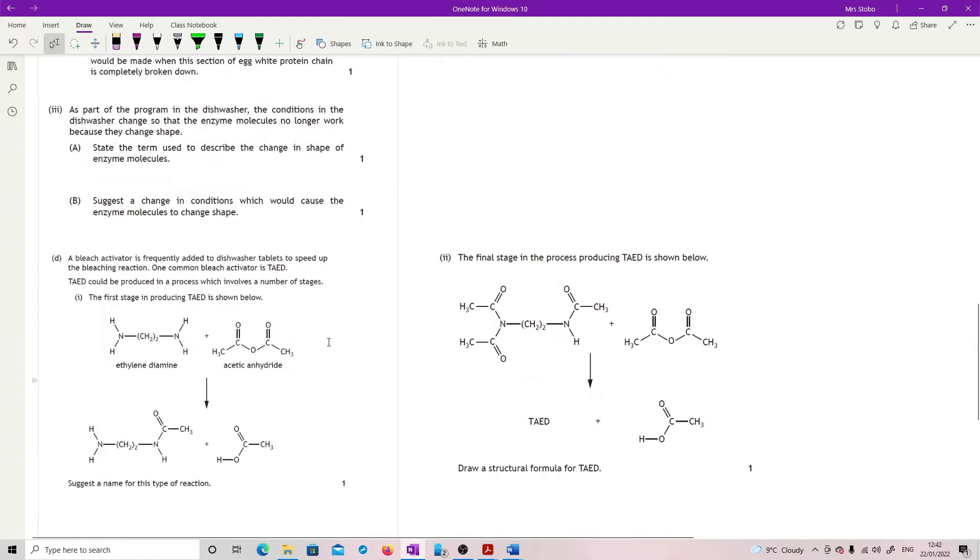As part of the program in the dishwasher, the conditions change so that the enzyme molecules no longer work because they change shape. State the term used to describe the change in shape of enzyme molecules. So the enzyme molecules have denatured, or denaturation if we're looking for the process.